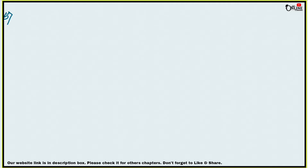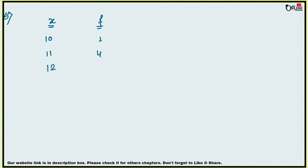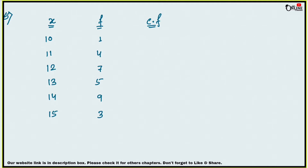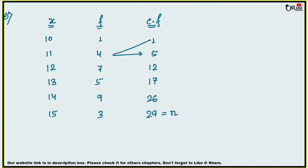Question number 5: find the mode and median of the following frequency distribution. The data is: x=10 (f=1), x=11 (f=4), x=12 (f=7), x=13 (f=5), x=14 (f=9), x=15 (f=3). The cumulative frequencies are: 1, 5, 12, 17, 26, 29. So n = 29, which is odd.